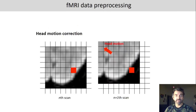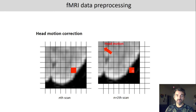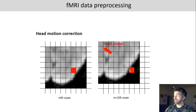Head motion correction is necessary because we might have a large change in position of the participant or their brain during a session in the scanner. If we're measuring at the same voxel, at one point it might not even be inside the brain anymore because the participant has changed position. Even if it was in the brain, we want to make sure we're measuring from the same position, because otherwise the data across trials would not be comparable.